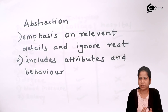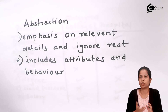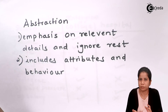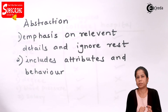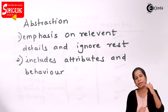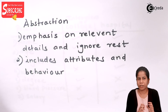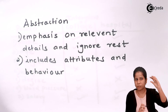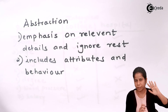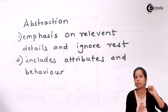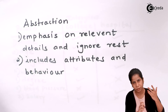Abstraction is — in this real world, whenever I am seeing any object, this object consists of n number of attributes and behaviors. Let's take an example. If I say 'person' — any person — whenever I am looking at this particular person for the first time, I am thinking about some features, some attributes, some behavior about that particular object.